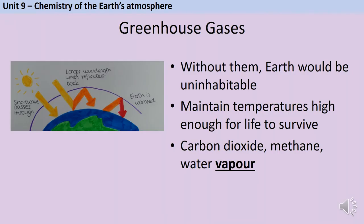Now let's look at greenhouse gases - what are they, where do they come from, and why is everybody so concerned? The first thing to clear up is that greenhouse gases aren't fundamentally a bad thing. If there were no greenhouse gases on Earth, it would be far too cold for life to survive. The best way to think about this is imagining that greenhouse gases are a duvet - they form a kind of blanket around the Earth. If it's very cold, you're grateful for your duvet, but if somebody gave you a second or third duvet, you'd be majorly overheating. The issue isn't that the duvet is a bad thing - it's just that we have too much of it right now.